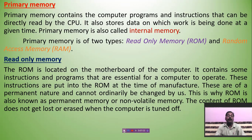The two types of primary memory are: Read Only Memory, in short ROM — R for Read, O for Only, M for Memory — and Random Access Memory, in short RAM. First, let's look at Read Only Memory. By the name it is clear — it is a kind of memory from which we can read only. The ROM is located on the motherboard of a computer; it is a small chip fixed on the motherboard.